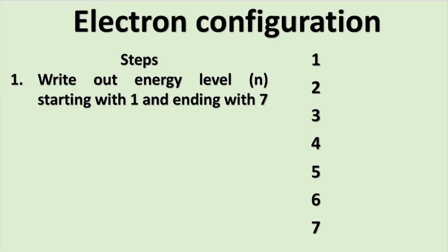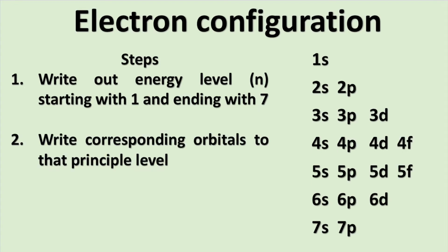I am going to teach you a helpful tool that will make writing electron configurations easier to do. What you'll do is first write the principal numbers starting with 1 and ending with 7. Once you have done this, we will then write the following orbitals that correspond to that energy level. So when n is equal to 1, l is equal to 0, which corresponds to an s orbital. When n is equal to 2, then l is equal to 0 and 1, which corresponds to the s and p orbital.